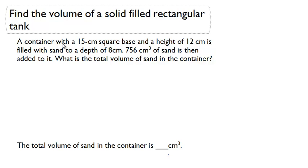A container with a 15 centimeter square base and a height of 12 centimeters is filled with sand to a depth of 8 centimeters. 756 cubic centimeters of sand is then added to it. What is the total volume of sand in the container?